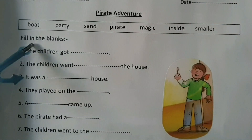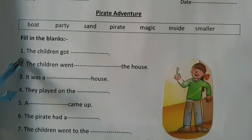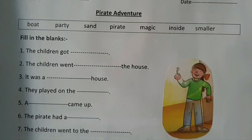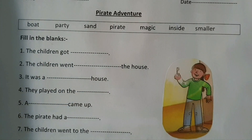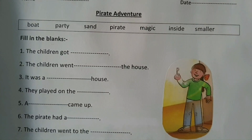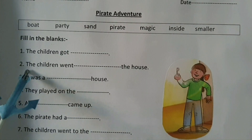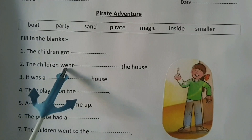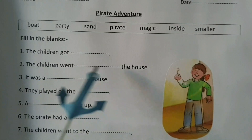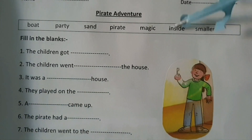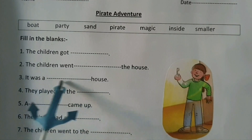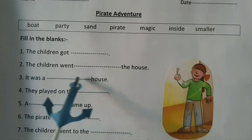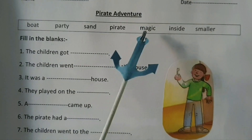Alright, fill in the blanks. Number one: the children got smaller. The children went inside the house. It was a magic house.